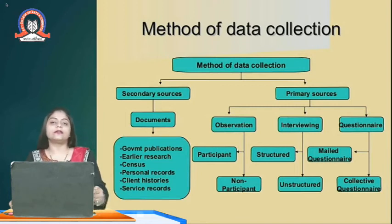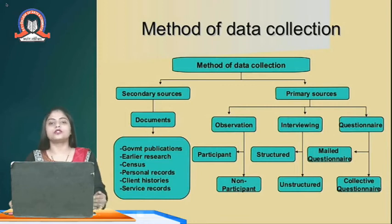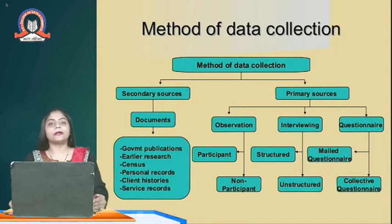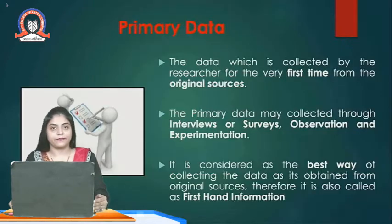Primary data can be collected in three forms: one is survey or interview method, another is observation method, and the third is experimentation method. The survey or interview method is when the researcher does a field survey and collects data from respondents by making a questionnaire in a structured form. Secondary data is already published data — in newspapers, books, magazines, bulletins, journals, etc.